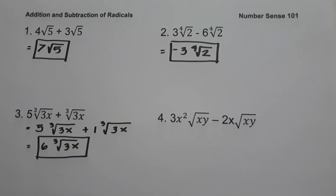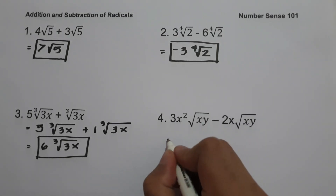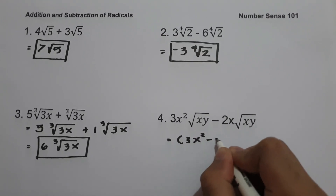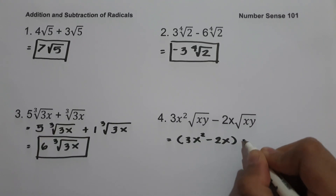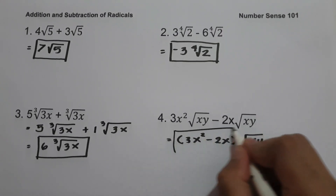On example number four we have three x squared square root of xy minus two x square root of xy. We still have the same index and same radicand, but as you can see we have different exponents in variable x. Since we can combine these, all we have to do is write (three x squared minus two x) times square root of xy, and this will be our answer.